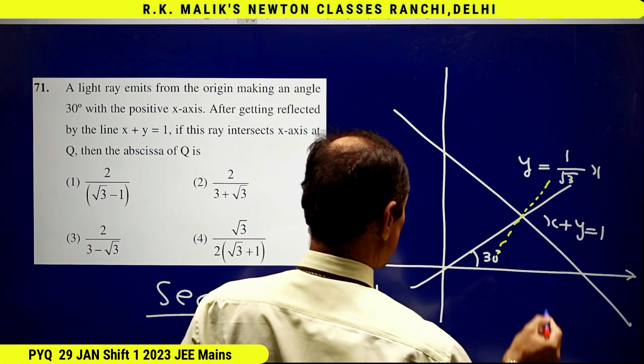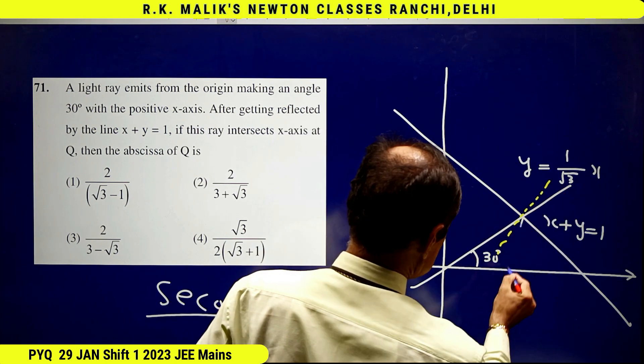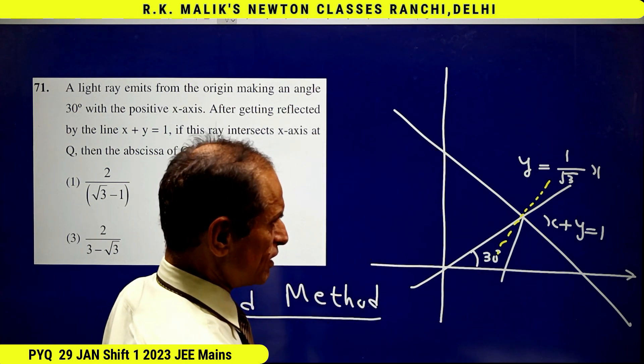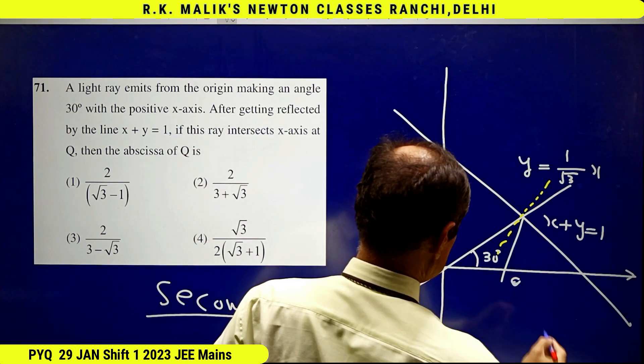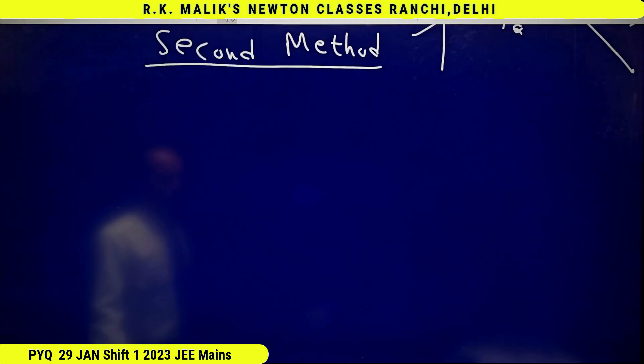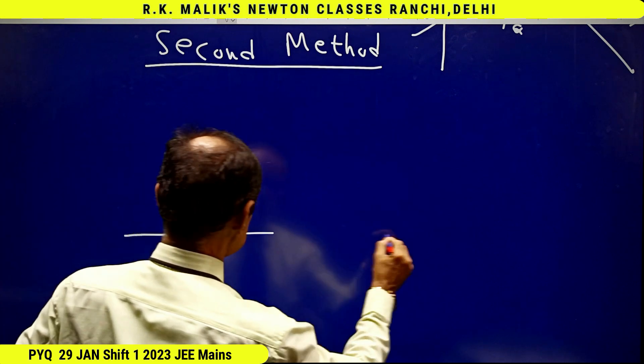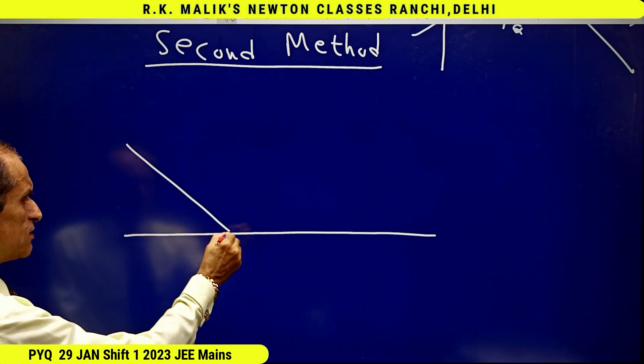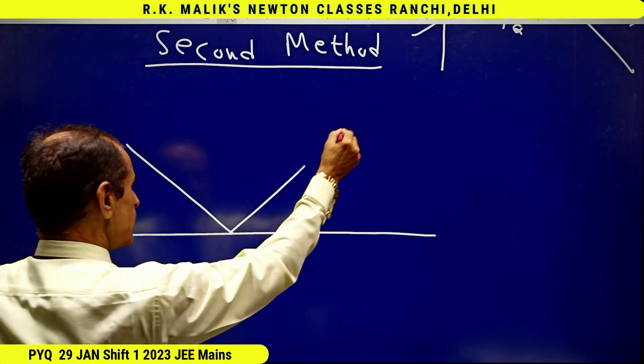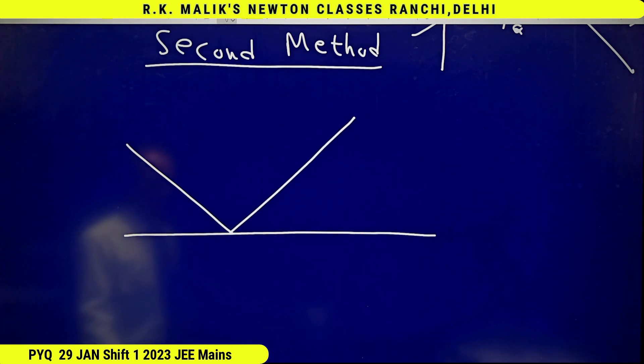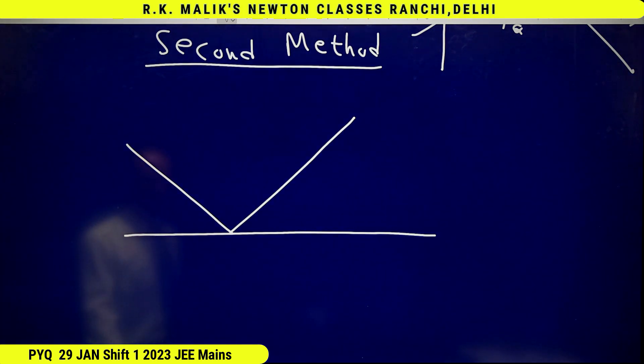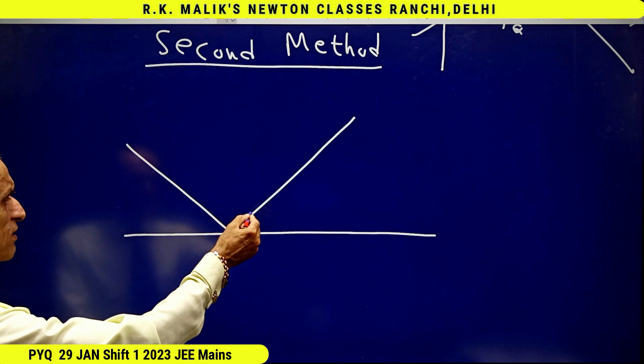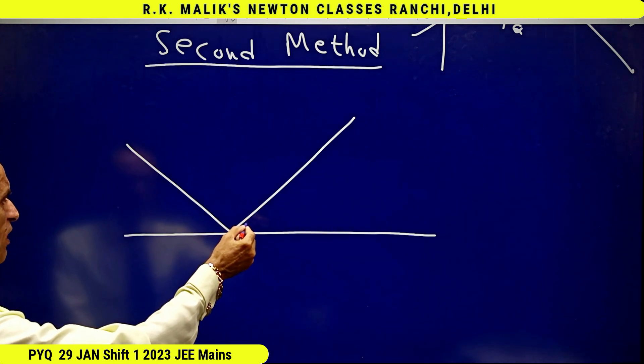This is the normal, this is the reflected ray, and this is point Q. In this method, I am going to use this property: suppose this is a reflecting surface, this is an incident ray, and this is the reflected ray. It is a property of a reflected ray that the reflected ray behaves like...